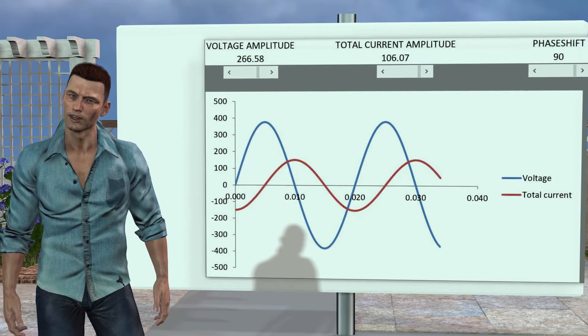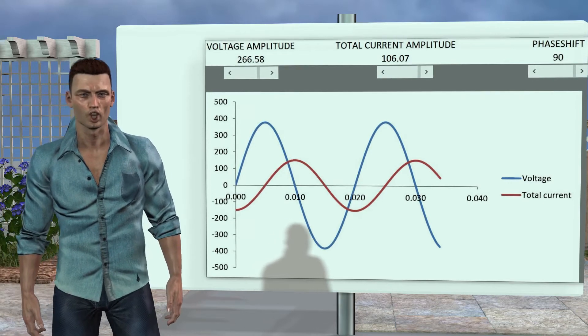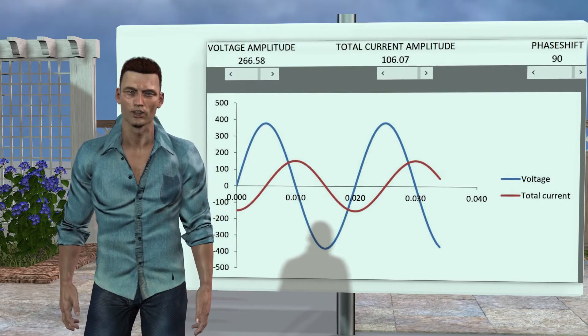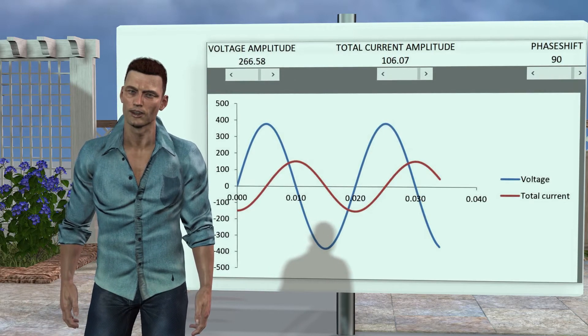that is, a quarter of a cycle, and if we consider a circumference that is 360 degrees, a quarter of a cycle will be precisely, those 90 degrees that we had commented.